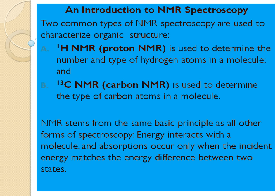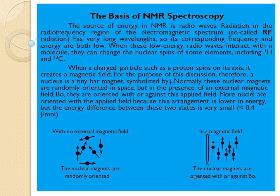In NMR, we have the alpha spin state and the beta spin state. When incident energy matches the energy difference between these states, absorption of electromagnetic radiation occurs. In NMR spectroscopy, the electromagnetic radiations involved are in the radio frequency region of the electromagnetic spectrum.